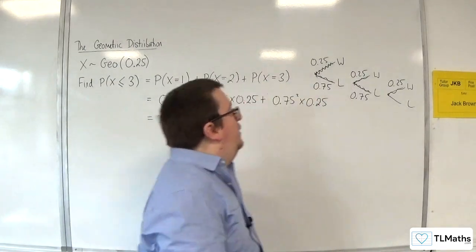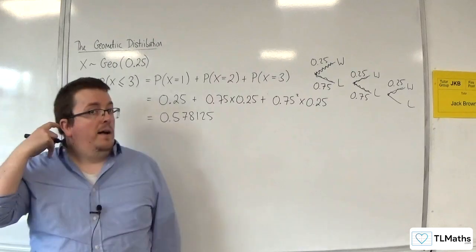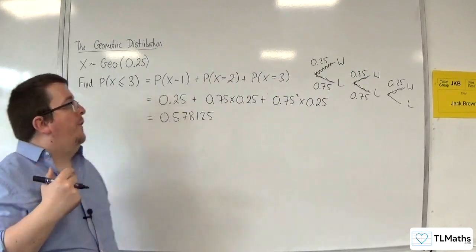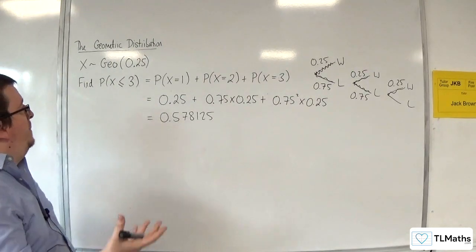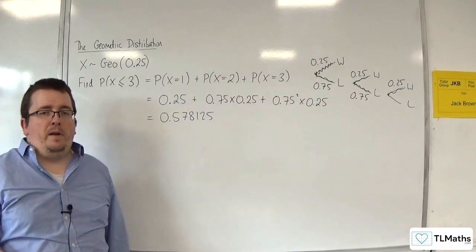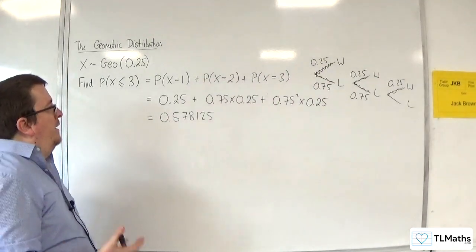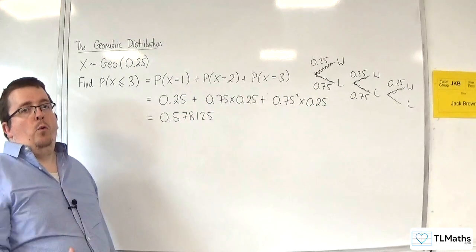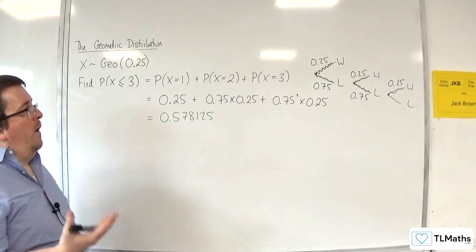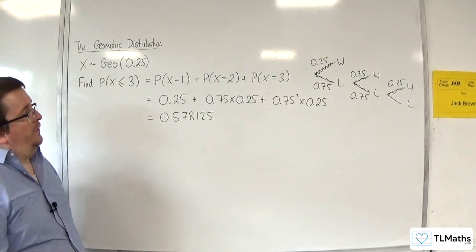Now this is going to become a little cumbersome if I start wanting to find the probability of X being less than or equal to 10 or something like that. I don't really want to have to write out all of that. So is there a way of me being able to shortcut this?